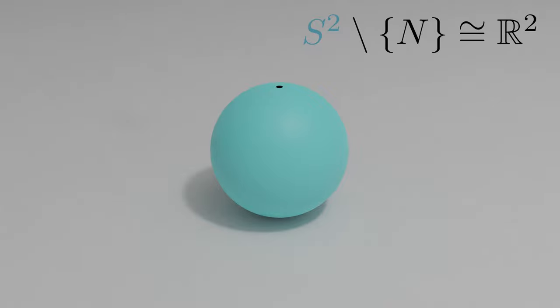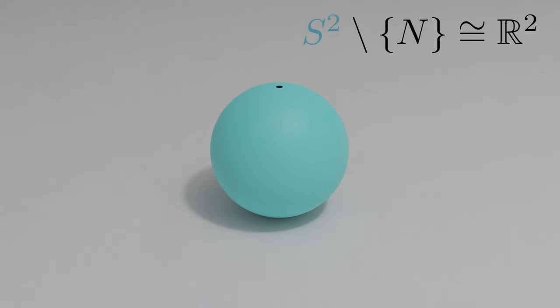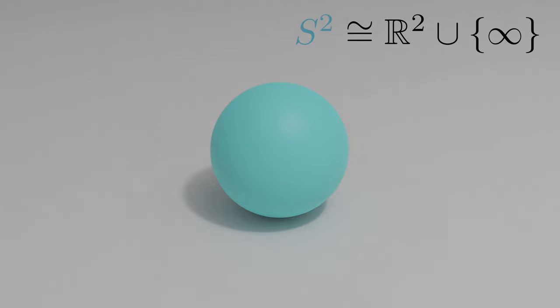Welcome to part 3 of this series. In the last video, we proved a homeomorphism between the punctured sphere and R2 after finding an inverse to our stereographic projection function and then proving continuity of both the forwards and inverse functions. In this video, we'll prove that the entire sphere and the one-point compactification of our plane are homeomorphic.